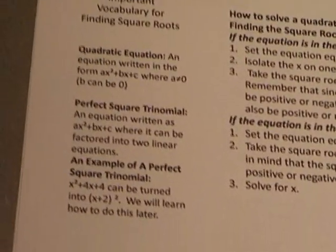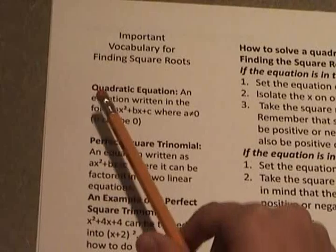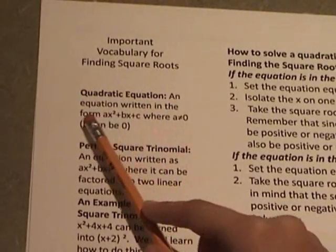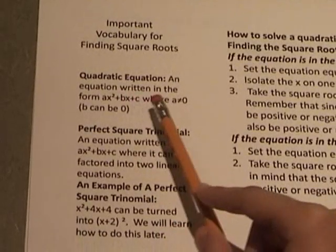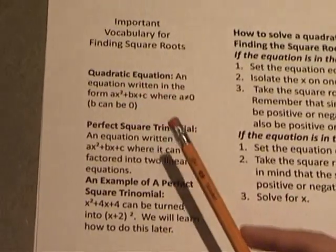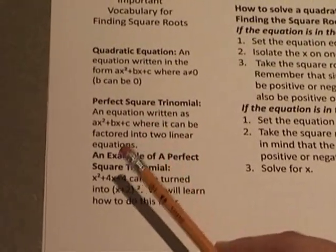Some important vocabulary that you will need to know is a quadratic equation is an equation written in the form ax squared plus bx plus c, where a does not equal zero. However, b can be zero, as you will see in some further equations.